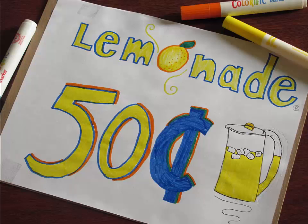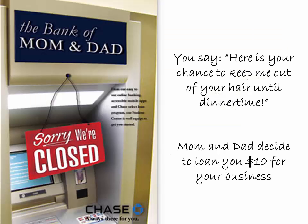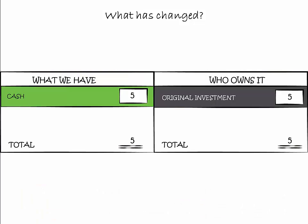Luckily, you have wonderful friends to help you out whenever you need them. Your best friend makes a sign for your lemonade stand. You realize that $5 probably will not be enough to start your lemonade business, so you go to the bank of mom and dad. You convince them to loan you $10 for your business. Before you try to run off with the $10, mom makes you sign a piece of paper that says 'I Owe You' at the top. What will happen to our record-keeping table?